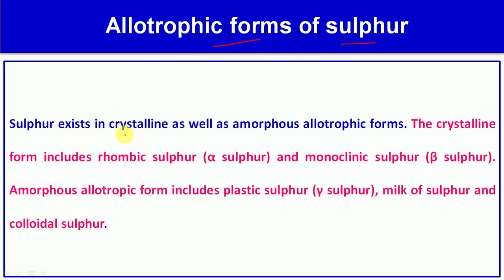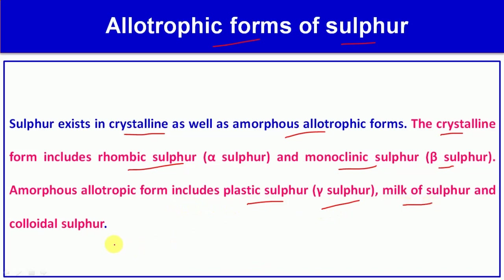Sulfur exists in crystalline as well as amorphous allotrophic forms. The crystalline forms include rhombic sulfur (alpha sulfur) and monoclinic sulfur (beta sulfur). Amorphous allotrophic forms include plastic sulfur (gamma sulfur), milk of sulfur, and colloidal sulfur.